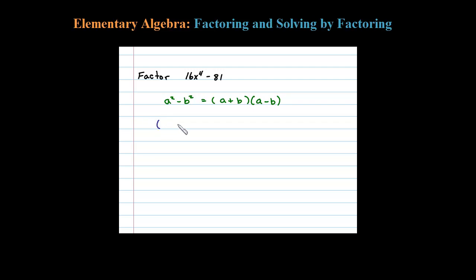The first thing you want to do is look at the first term. What squared will give me 16x to the fourth? Well, 4 squared is 16, and x squared squared is x to the fourth, so we're going to use 4x squared—that's going to be my a.